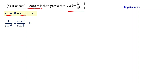Substituting: 1 by sin theta plus cos theta by sin theta equals k. Combining over the common denominator sin theta gives 1 plus cos theta divided by sin theta equals k. Then rearranging: 1 plus cos theta equals k times sin theta.